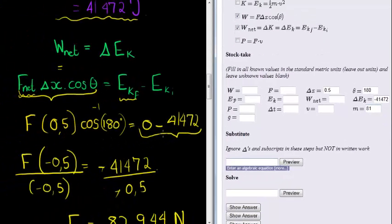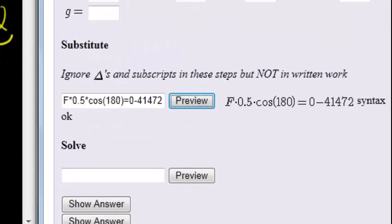So what did our substitution step come to. Using F for force, ignoring subscripts. Force times 0.5 times cos of 180 degrees is equal to 0 minus 41,472. Preview, perfect.